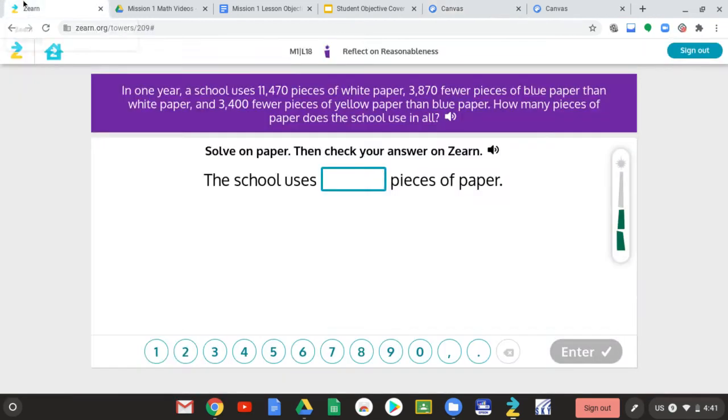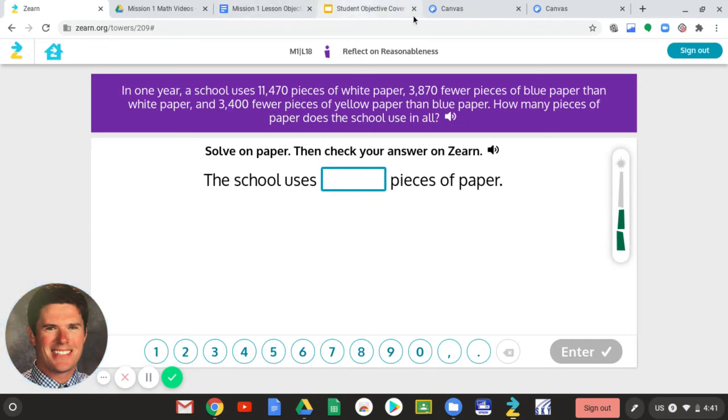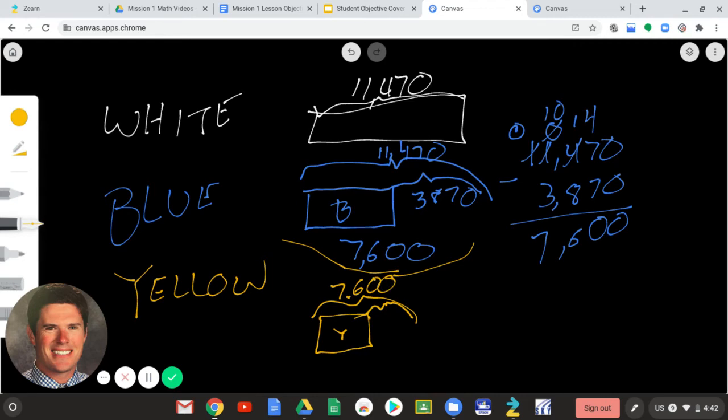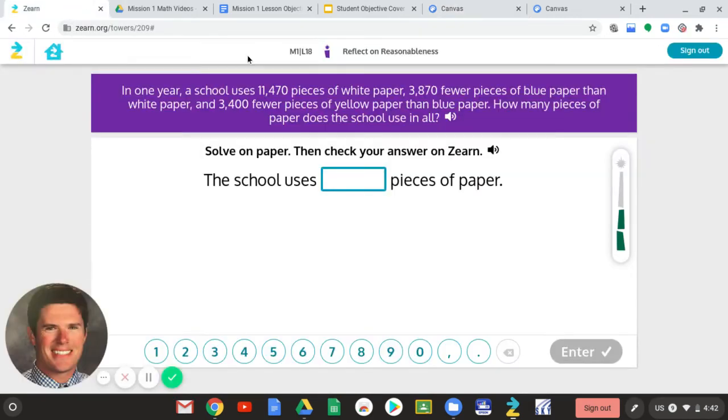Now, if we take a look at the yellow paper, it says, let's see, 3,400 fewer pieces of yellow paper than blue paper. So, we knew that our blue paper, we decided, was 7,600. So, we're going to draw a tape diagram here. Let's move it down a little bit. So, that's yellow, which we don't know. But, to make it the same size as the blue, which is 7,600, we know that it's how much less? 3,400.